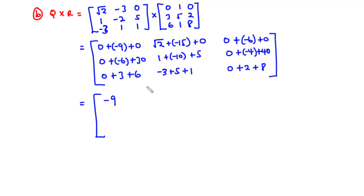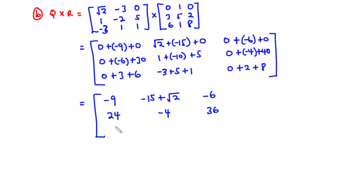Simplifying: row 1 gives −9; √2 − 15; −6. Row 2: −6 + 30 is 24; 1 − 10 + 5 is 6; wait, 1 plus 5 is 6, −4 + 40 is 36. Row 3: 3 + 6 is 9; −3 + 5 + 1 is 3 — wait, 5 + 1 is 6, 6 − 3 is 3; and 2 + 8 is 10. So Q times R equals [−9, −15 + √2, −6; 24, 6, 36; 9, 3, 10]. This is the resulting matrix of Q times R, and that is how to multiply 3 by 3 matrices.